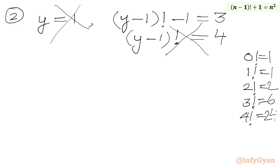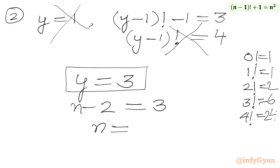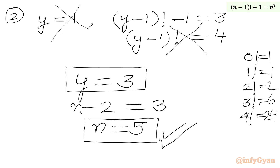So the accepted solution is y equal to 3. Since y was our substitution for n minus 2, we write n minus 2 equal to 3. Adding 2 to both sides gives n equal to 5. So our answer is n equal to 5.